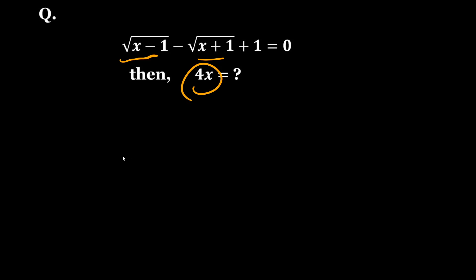So we have root under x plus 1. I am rearranging this, so I will take this root x plus 1 to the right hand side equal to root under x minus 1 plus 1. Now if I square both sides,